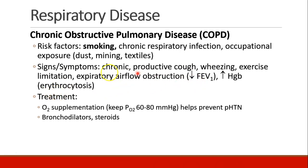We expect an expiratory airflow obstruction, so a decrease in FEV1. And because of their chronic hypoxia, they start to develop an increase in hemoglobin — they develop an erythrocytosis — so their hematocrit will be very high.